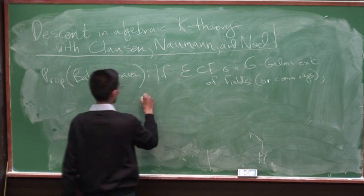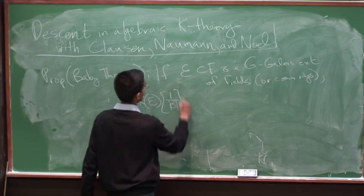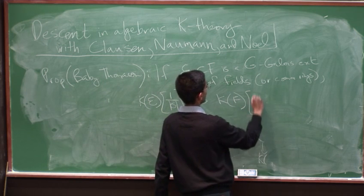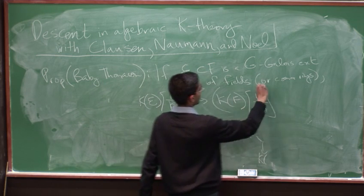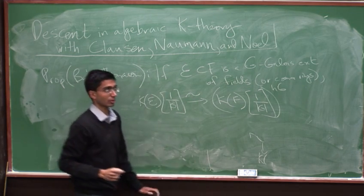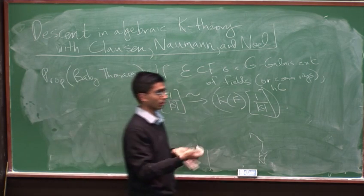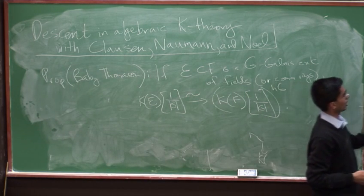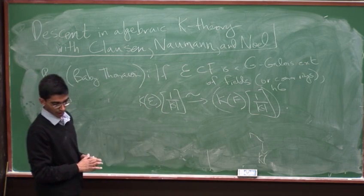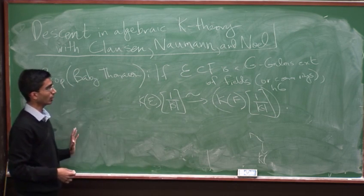So if E to F is a G Galois extension of commutative rings, or fields, or more generally commutative rings, then the natural map from the algebraic K-theory spectrum of E, where we've inverted the order of the group, to the homotopy fixed points on the algebraic K-theory spectrum of F, where again we've inverted the order of the group. So we have this natural map, and this is an equivalence. So in particular, when we work rationally, algebraic K-theory, I guess modulo this issue of pi zero which I mixed up here, is a sheaf.